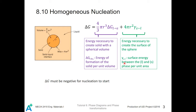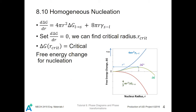Gamma is the surface energy between the liquid phase and the solid phase per unit area. We know that this equation must release energy for the nucleation to start. If we take the derivative of this equation, we find the critical radius for nucleation to proceed indefinitely.